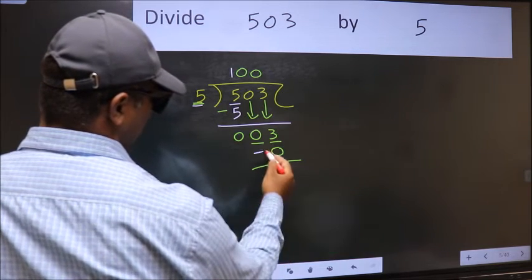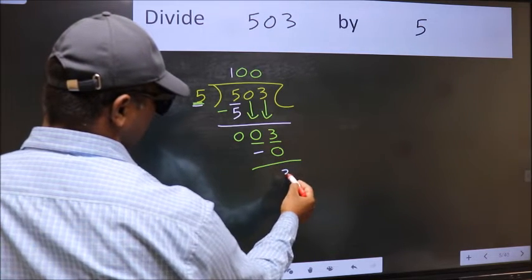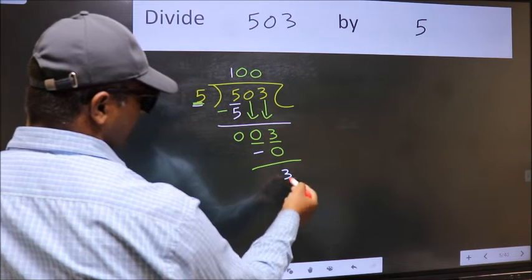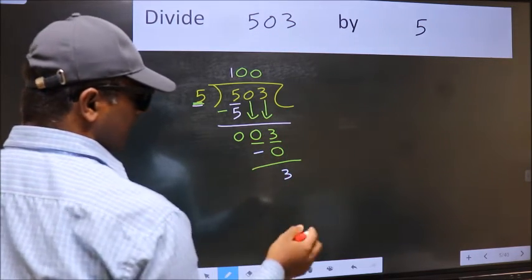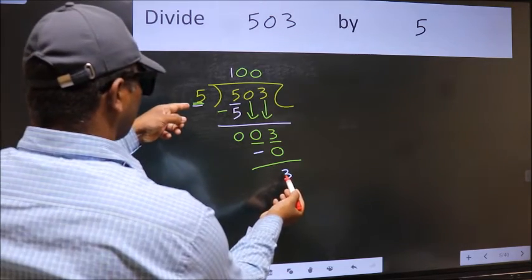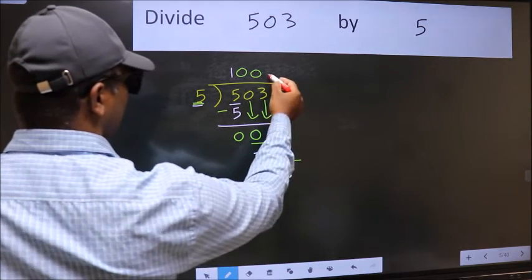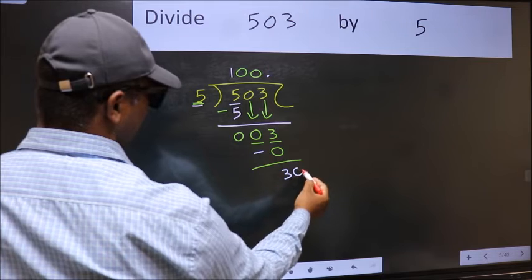Now we should subtract 3 minus 0, 3. Over here, we did not bring any number down. And 3 is smaller than 5.